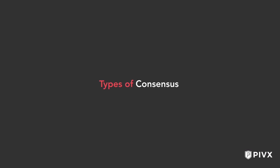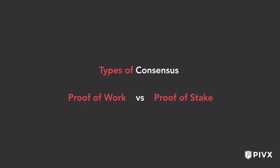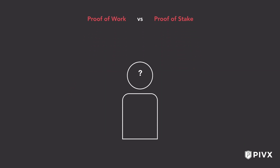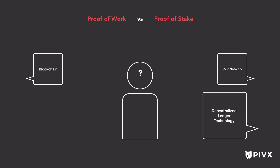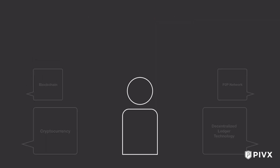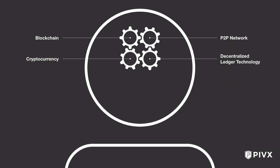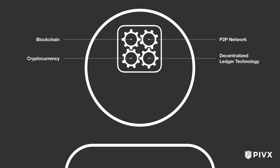This video will provide a non-technical explanation of types of consensus, specifically the differences between proof-of-work and proof-of-stake. To do this effectively, it must first provide a foundational explanation of blockchain, peer-to-peer networks, decentralized ledger technology, and cryptocurrency. The goal is to help you form a conceptual mental model of what these things are and how they work together in a larger system. The best way to do this is to use an analogy set in the physical world.